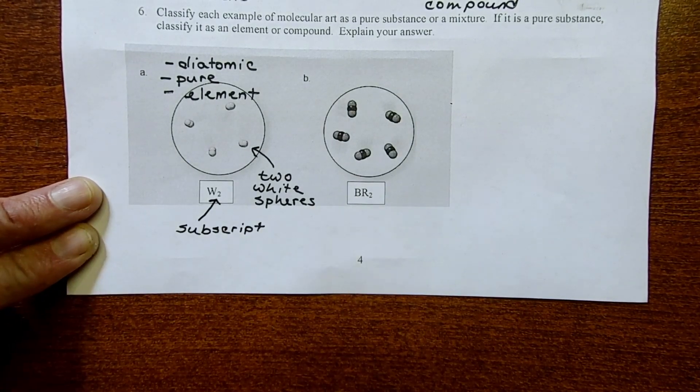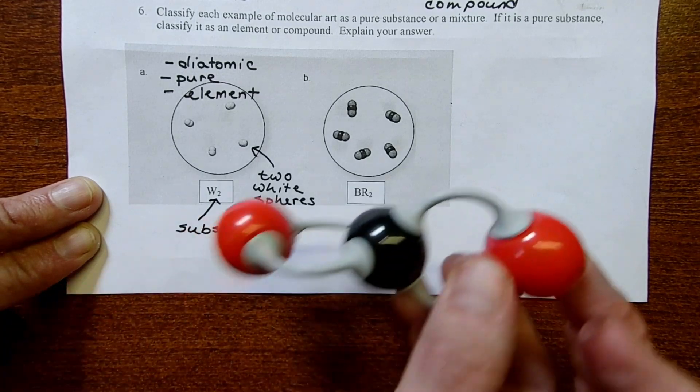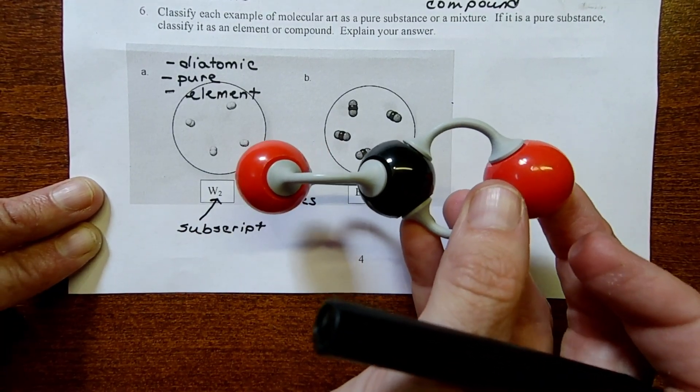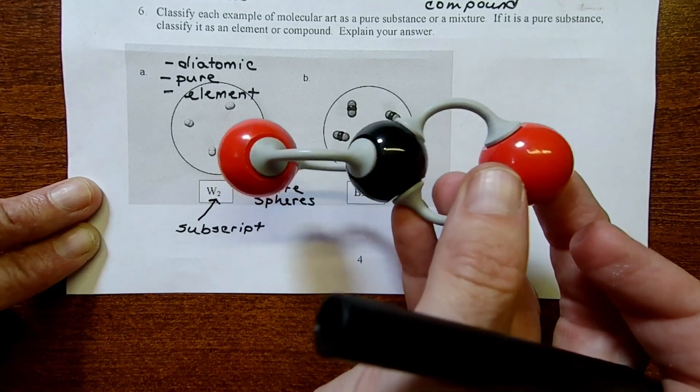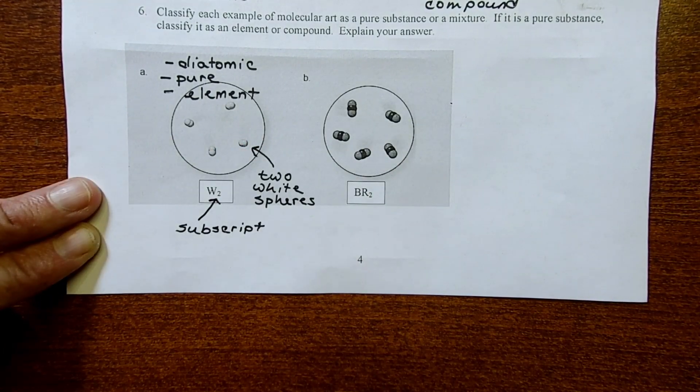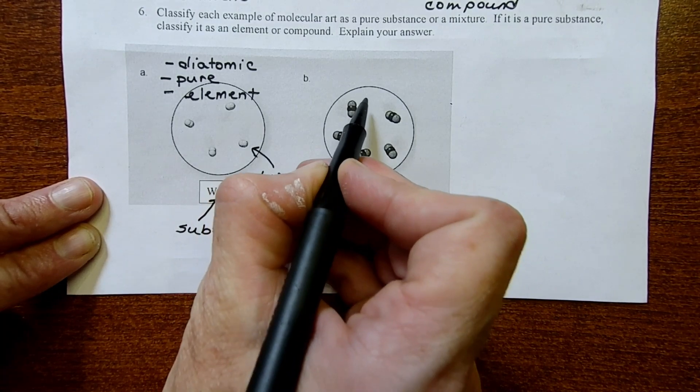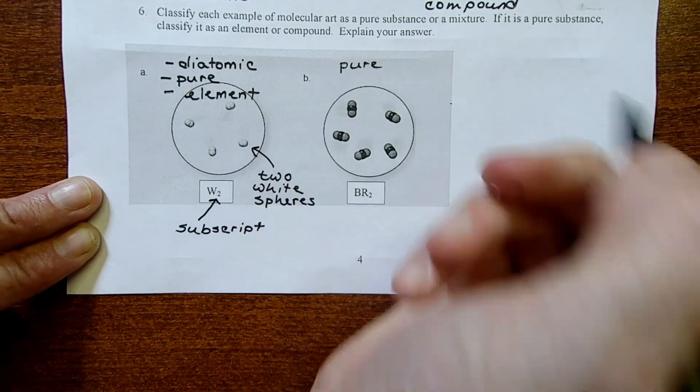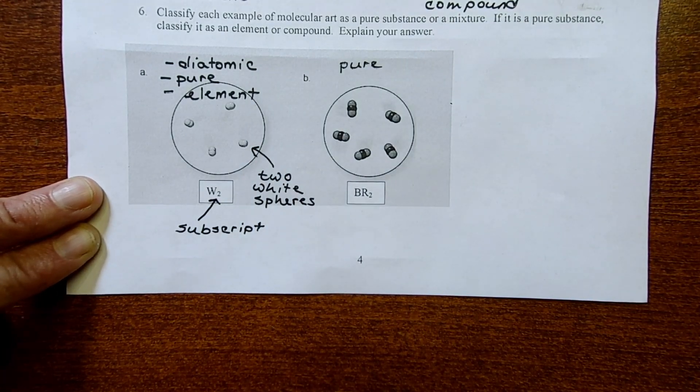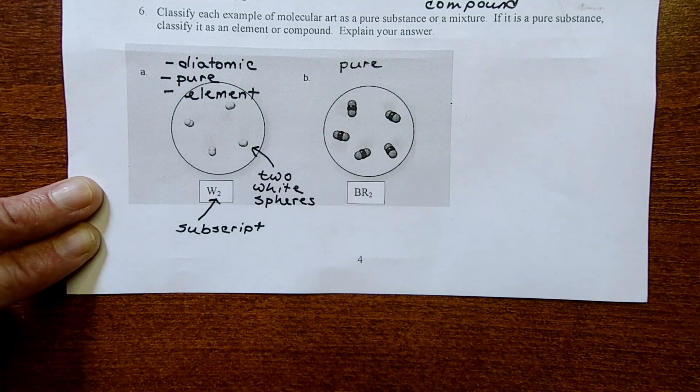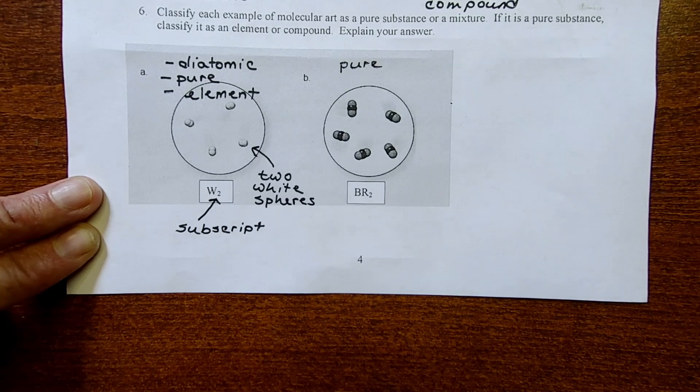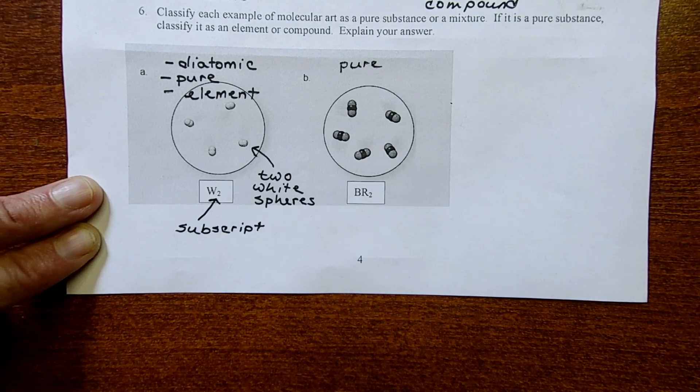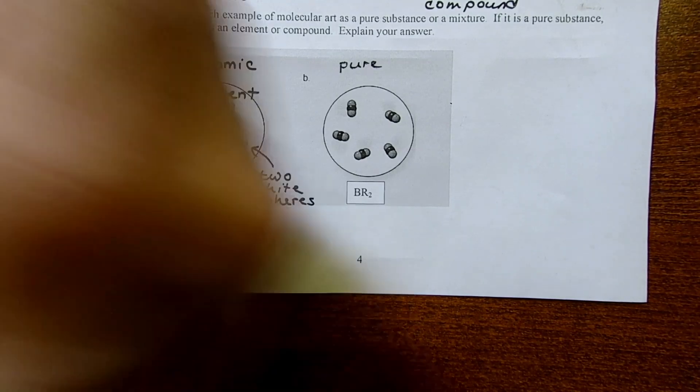In picture B, it looks like the carbon dioxide we saw in an earlier example. We have black with the two red spheres connected. First off, we need to establish that this is pure. Sometimes students say, why is it pure? There's a bunch of different colors in there. Because we see this repeating pattern. We only see one type of molecule. It's this red, black, red pattern over and over again. It's only one type of thing, even though that thing has multiple elements.